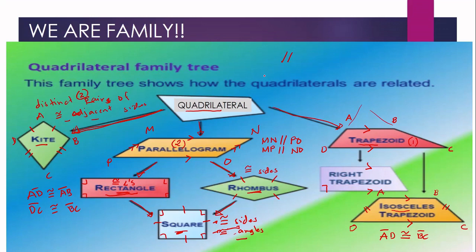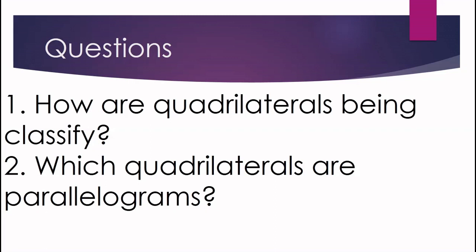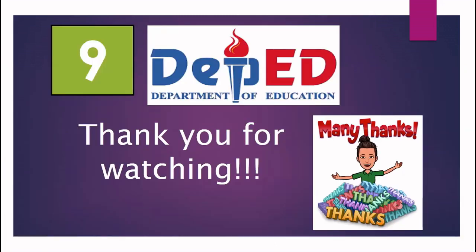So this is the classification of a quadrilateral. We have trapezoid with right trapezoid and isosceles trapezoid underneath. We also have parallelogram with rectangle, rhombus, and square. And we also have the kite. Quadrilaterals are classified according to the number of pairs of parallel sides. The quadrilaterals that are parallelograms are rectangle, rhombus, and square. That's it for today — I hope you get it. Thank you for watching.